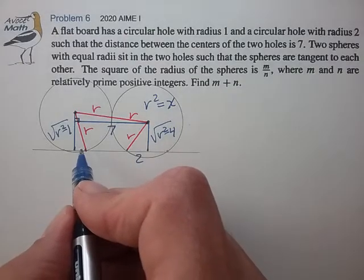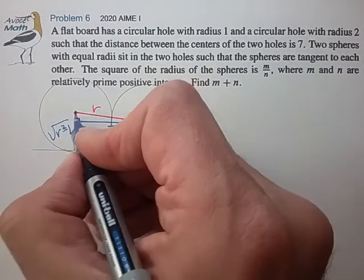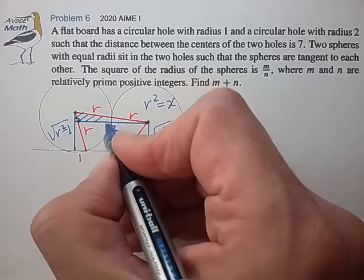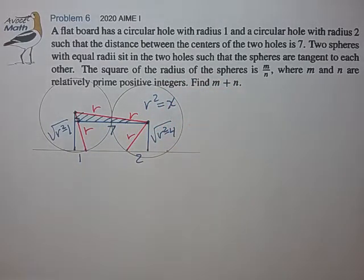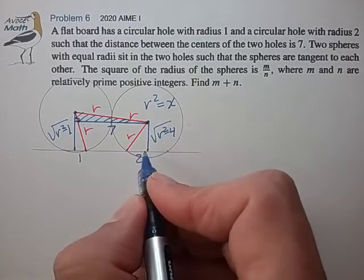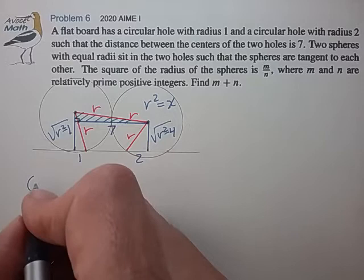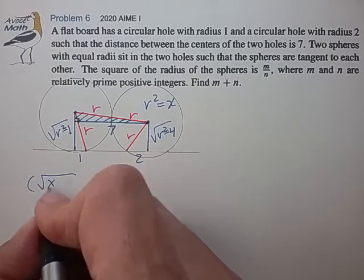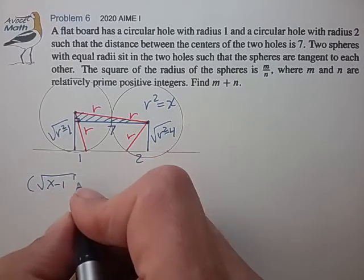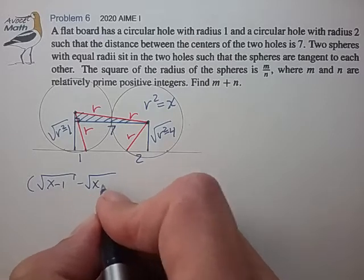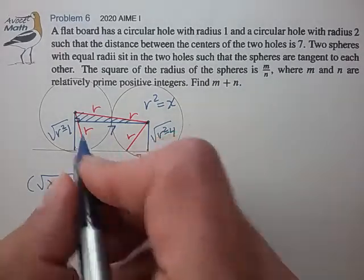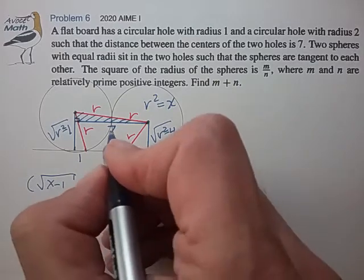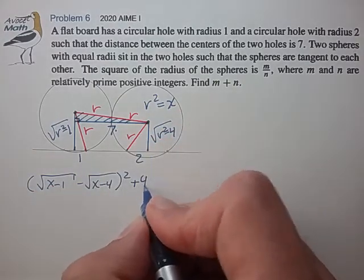And it looks like we can set up a Pythagorean relationship around this thin triangle to help solve for x. So let's head down that path. So the difference between these two altitudes, square root of x minus 1 minus square root of x minus 4 squared, plus 7 squared, 49, is equal to 2r squared, which is 4x.